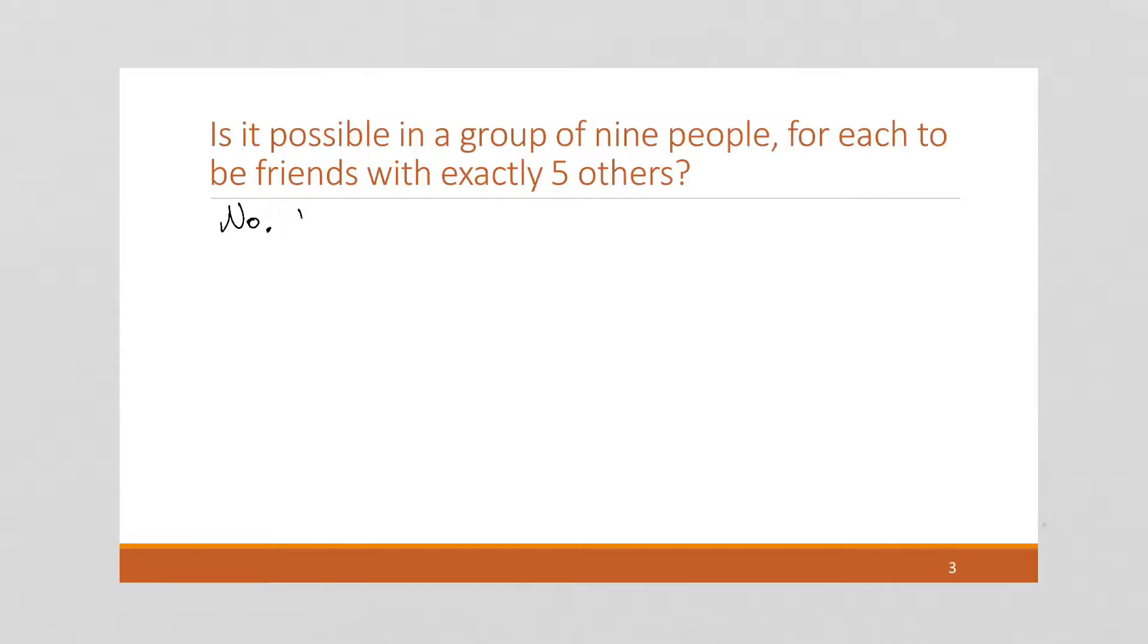So the idea is going to come down to some of that notion we talked about: degree and the total degree of a graph. To do proof by contradiction, we're going to suppose the opposite.